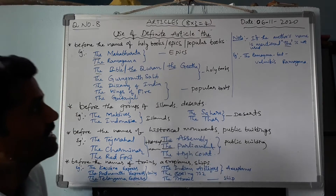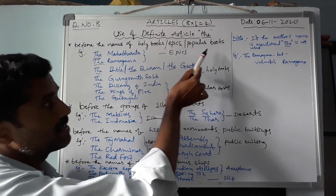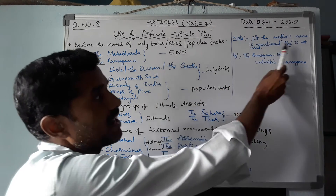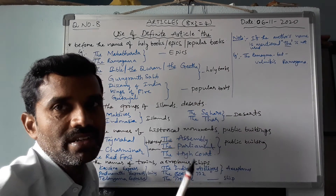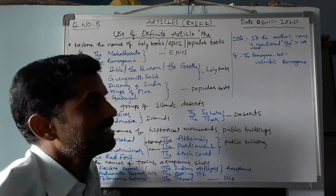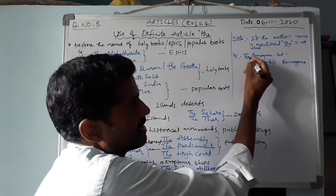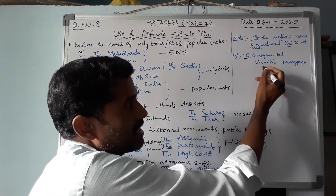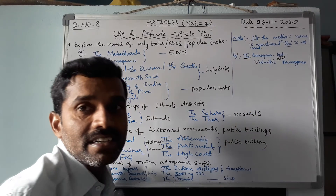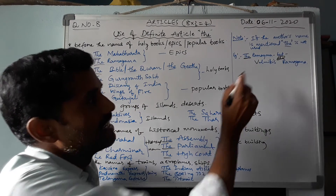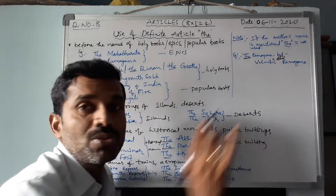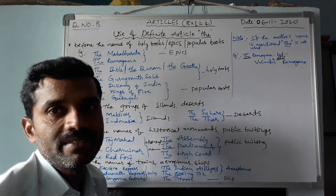One important note here: before the names of books, epics, or popular books, we normally use 'the'. However, if the author's name is mentioned, 'the' is not used. For example, we say 'the Ramayana', but when we mention the author's name, we say 'Valmiki's Ramayana' — not 'Valmiki's the Ramayana'. When the author's name is used, do not use the definite article 'the'.